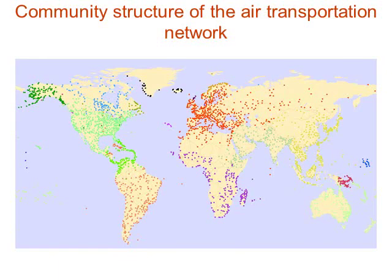For example, in the air transportation network, each node is an airport, and nodes are connected if there's a direct flight between them. When you apply a community structure algorithm to this network, you find that the communities correspond to geographical regions — exactly what you'd expect. The algorithm captures the geographical division of airports without having any direct knowledge of their geographic locations.